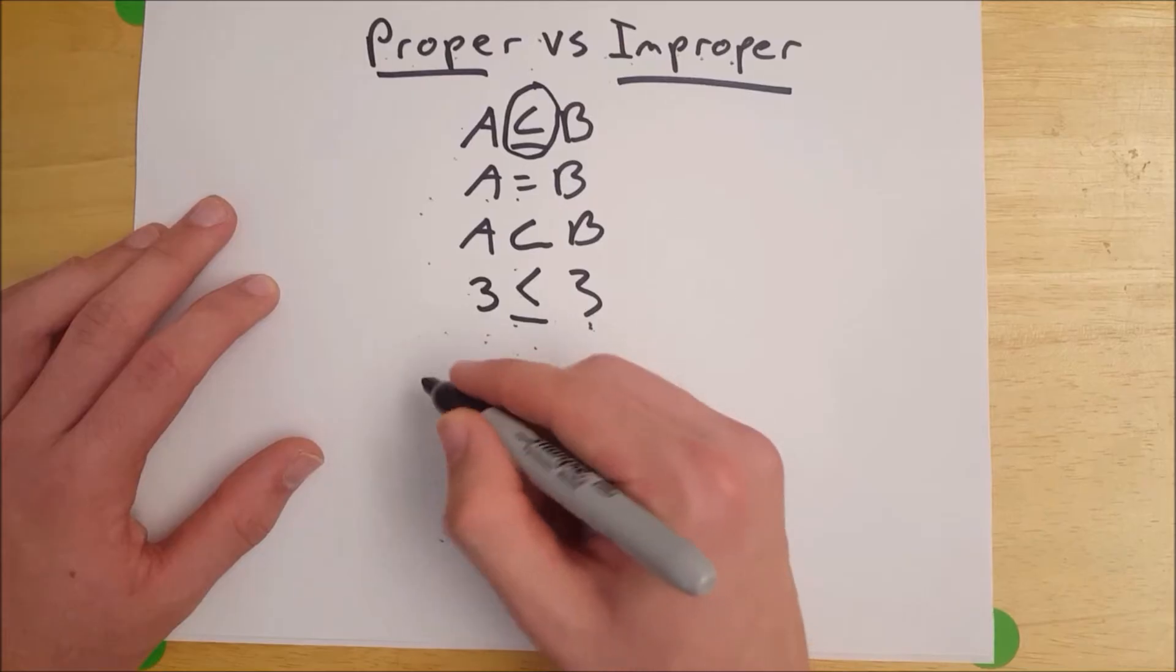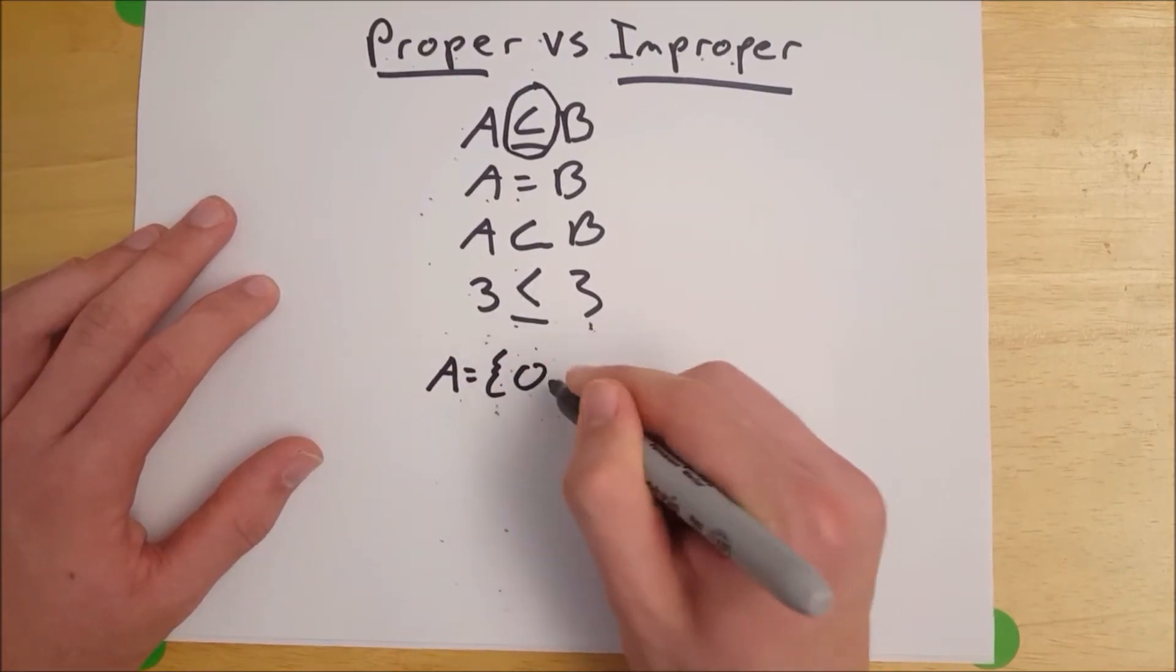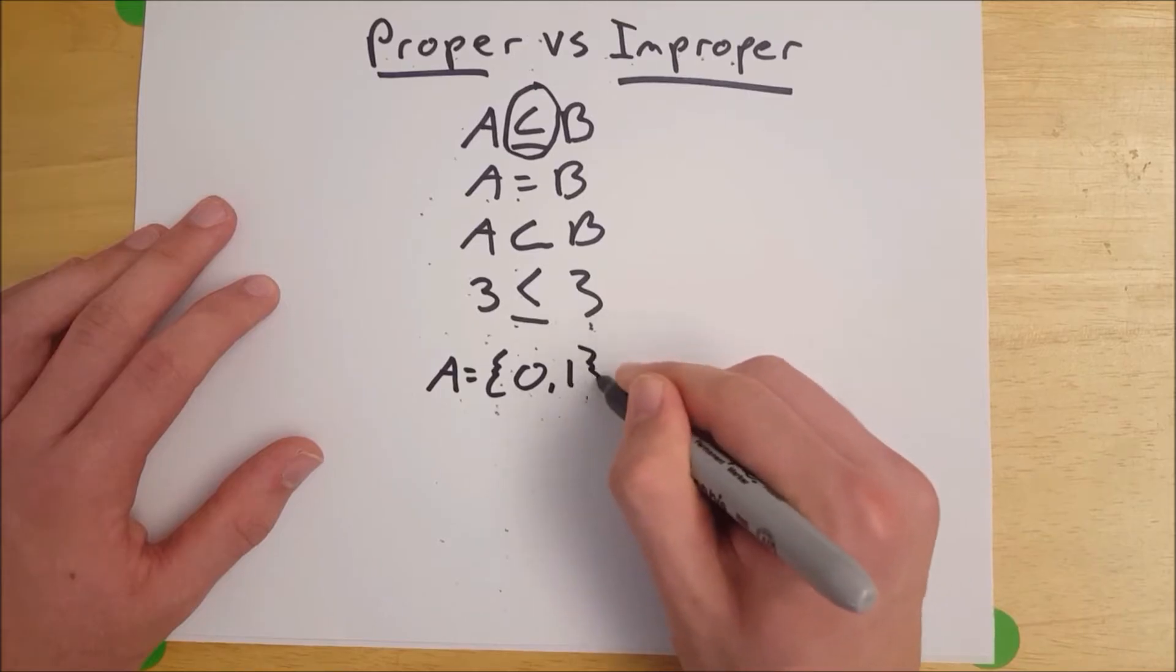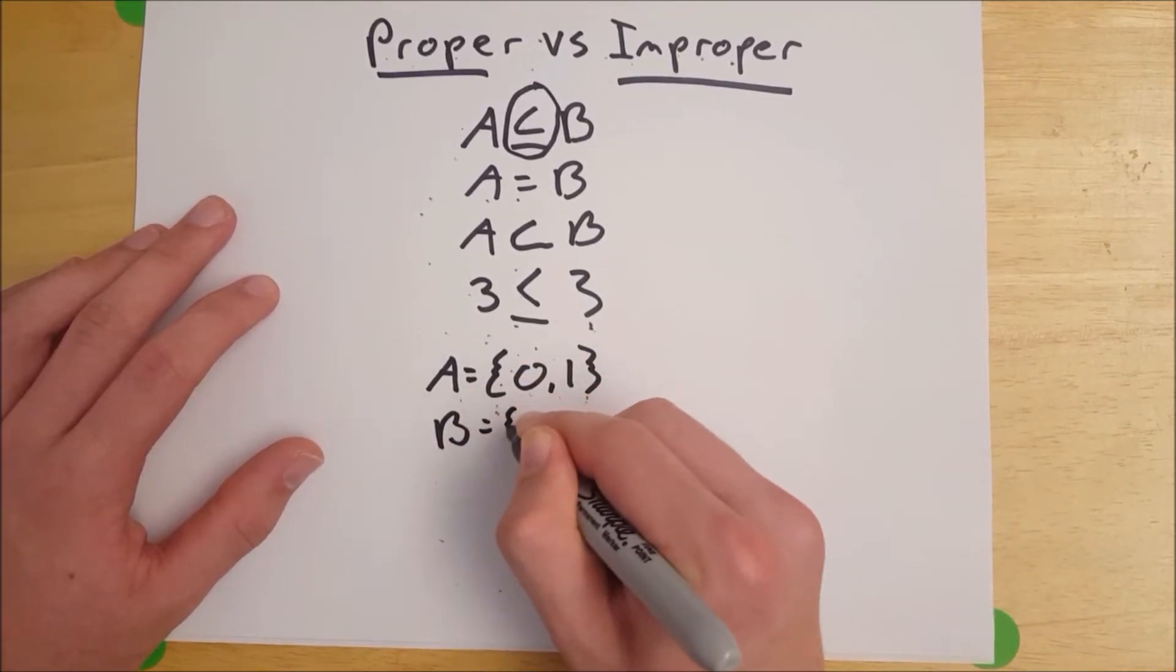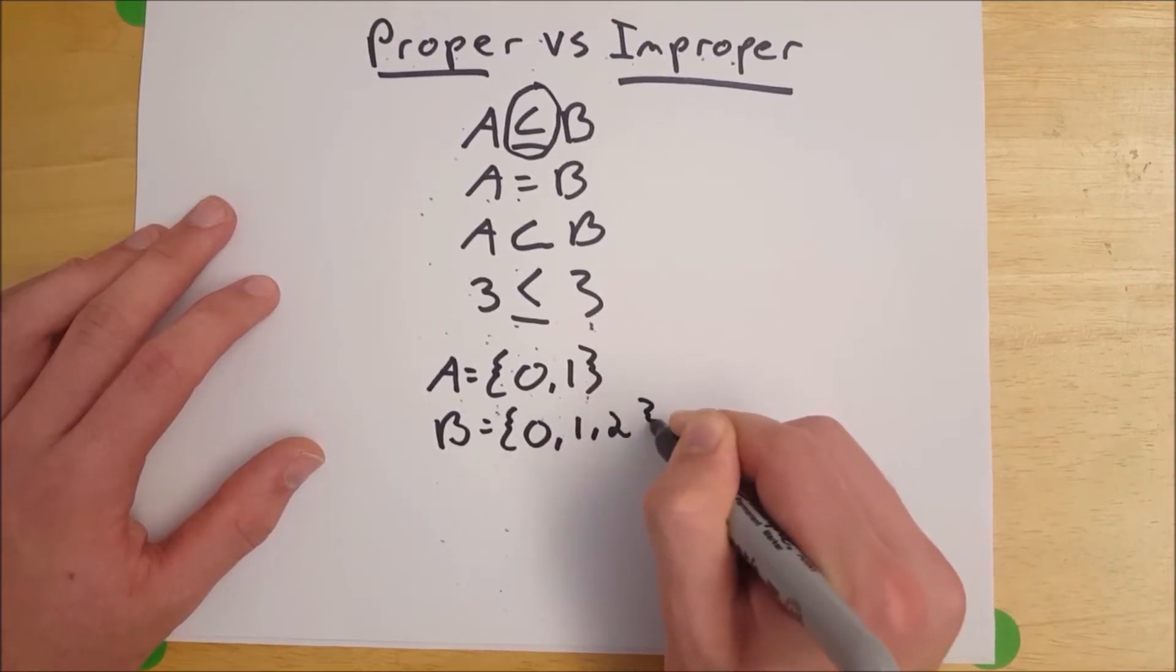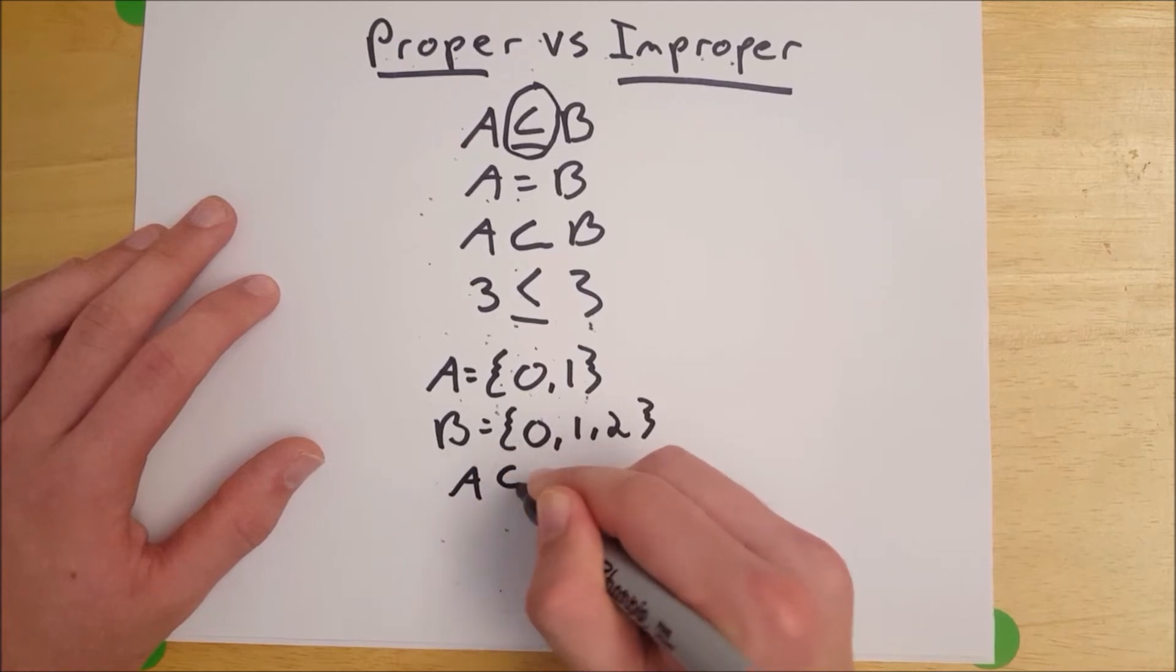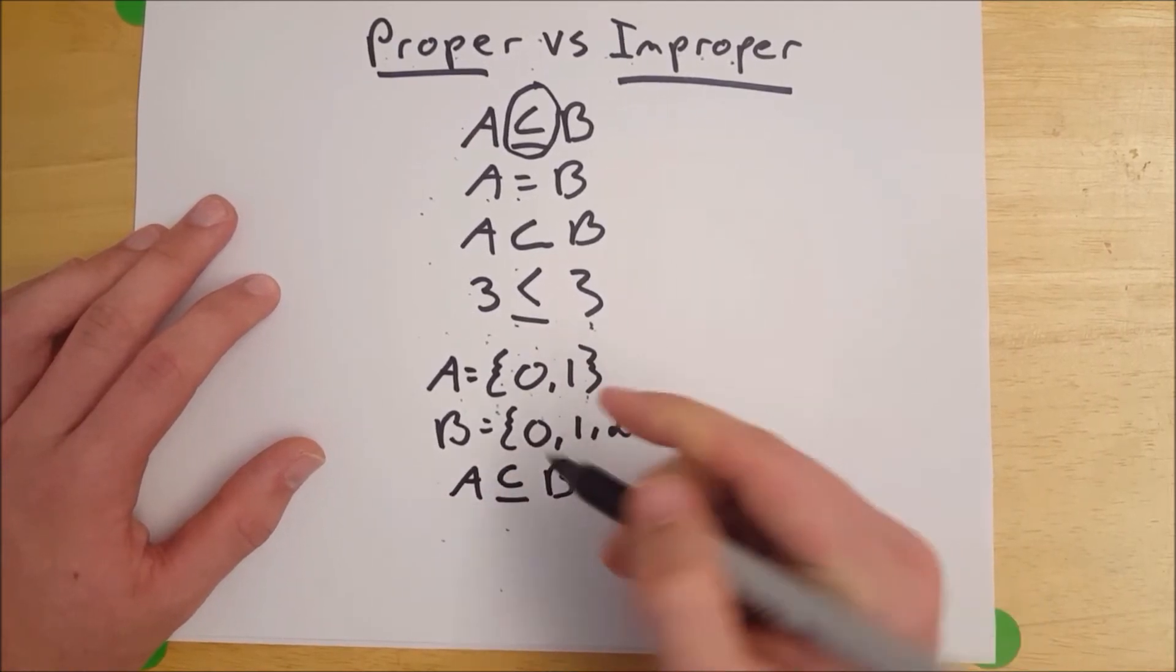So let's take a look at a little example. Let's say that A is equal to the set that has 0 and 1, and B is equal to the set that has 0, 1, and 2.